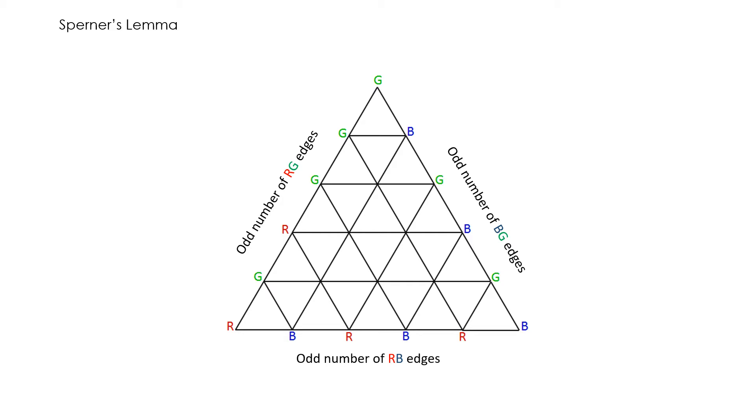Now notice that in this r, g edge, we only have an odd number of smaller r, g edges. So consider this large r, g edge here, we have 1, 2, 3, which is an odd number of smaller r, g edges. Now consider this one, this is an r, g edge, and we have smaller r, g edges.